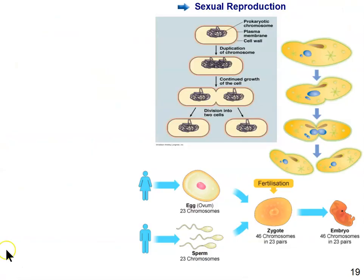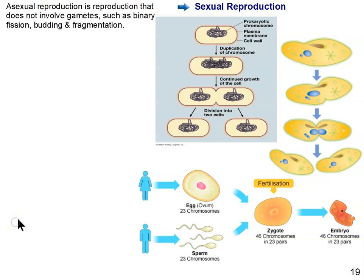Prokaryotes reproduce by binary fission — they just split in two, which is a form of asexual reproduction. With endosymbiosis and the evolution of eukaryotic cells, sexual reproduction eventually evolved. Asexual reproduction is reproduction that does not involve gametes — sperm and eggs, or sex cells. Binary fission is asexual. Budding is another form, where a smaller individual grows and eventually separates from a parent. Fragmentation is when an organism survives being cut into pieces and each piece grows into a new individual.